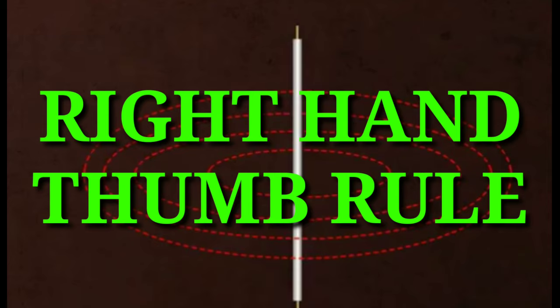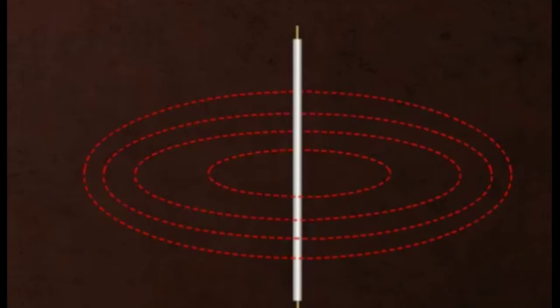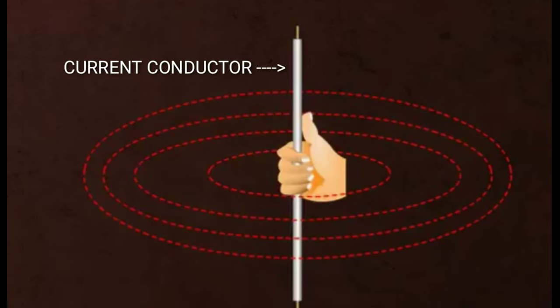Amei right hand thumb rule to pohim? Ikoi je, jodi edal current kering conductor ak amei huum haater ee dhorru. Aru, buray angolitwe, jodi current tor flow hua direction to buzai.